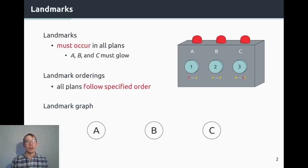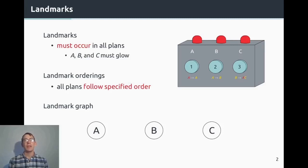What about landmarks? Landmarks are things that must happen in all solutions. For example, here all lights A, B, and C must glow, so they all are landmarks. We represent them in a landmark graph as nodes, so there are nodes A, B, and C in that graph.